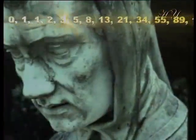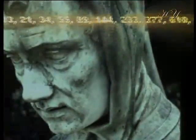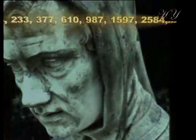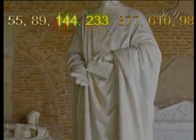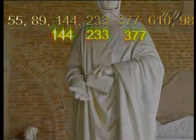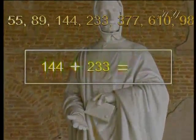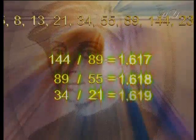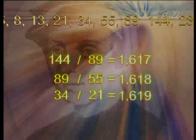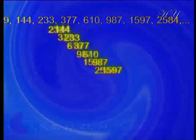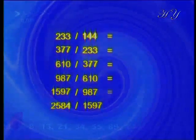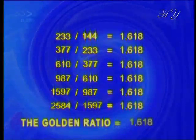The answer to this question lies hidden in a series of numbers discovered by the Italian mathematician Leonardo Fibonacci. The characteristic of these numbers, known as the Fibonacci numbers, is that each one is the sum of the preceding two numbers. Fibonacci numbers have an interesting feature: when you divide one number in the series by the number before it, you obtain numbers very close to one another. In fact, this number is fixed after the 13th in the series and is known as the Golden Ratio.